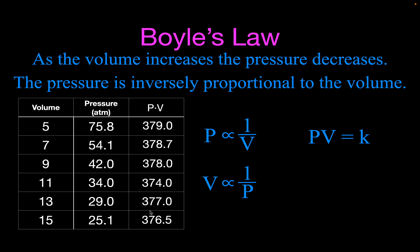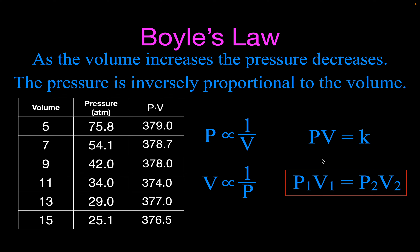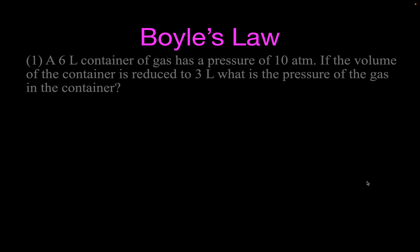Because all those constants are equal to each other, we can set any two values and use that as our Boyle's Law equation. So if I know the initial pressure and the initial volume, and I change the volume, then I can calculate what the new pressure will be. Let's do that in some examples right now.